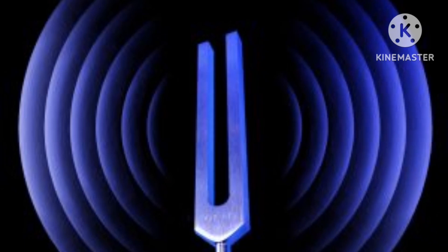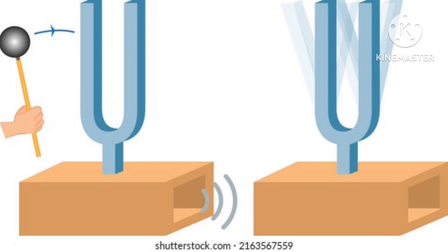This is a tuning fork. If you strike a tuning fork on a rubber pad and then bring it close to your ear, you can easily feel the vibration. Similarly, if you hit one leg of a tuning fork with an iron ball or stick, you can easily feel the vibration on its legs.